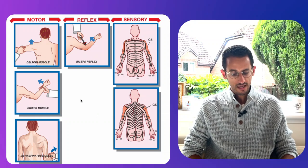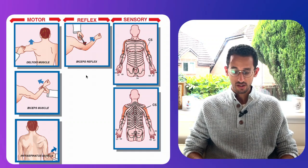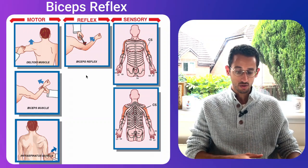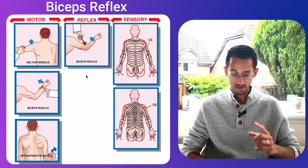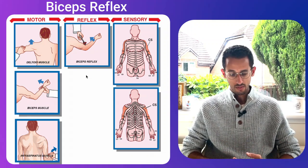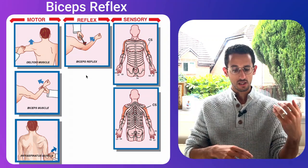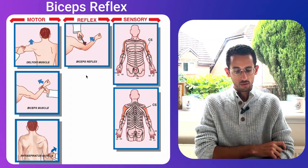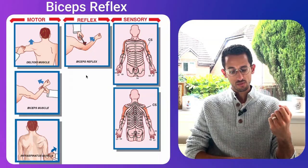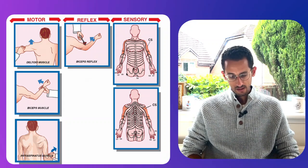Those are the three muscles, with the deltoid being the most important one. In terms of the reflex, the main reflex to test for C5 is the biceps reflex — keeping in mind that it is also supplied by C6, not only C5, as it receives supply from two segmental levels. To test it, ask the patient to keep their arm relaxed, place your finger on the tendon, and tap with your reflex hammer, looking for a flexion response.